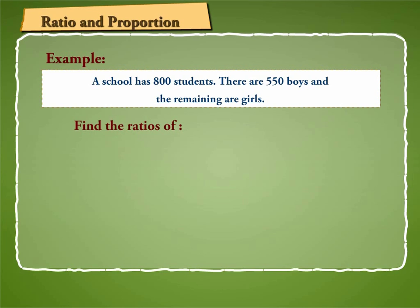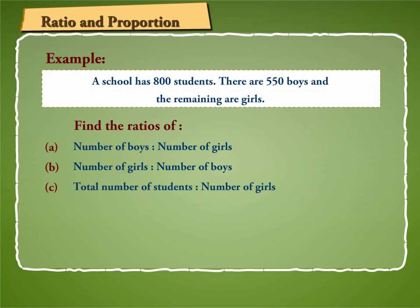Find the ratios of: A. Number of boys is to number of girls. B. Number of girls is to number of boys. C. Total number of students is to number of girls.